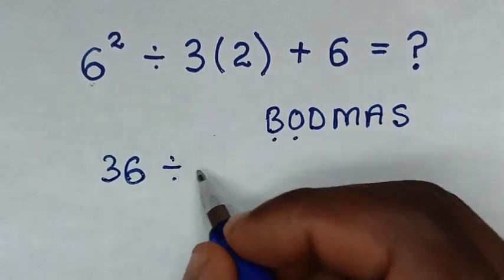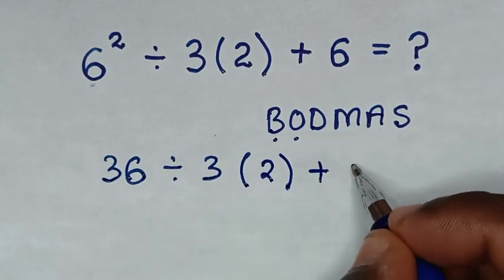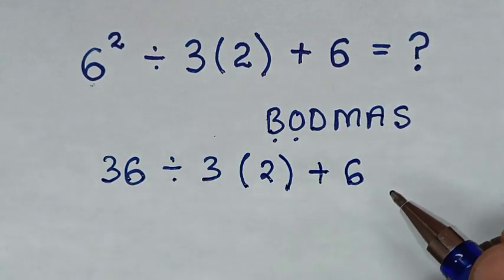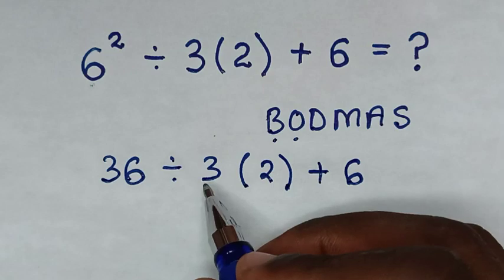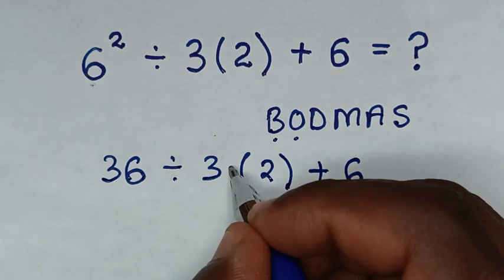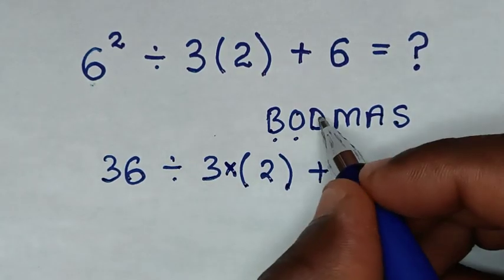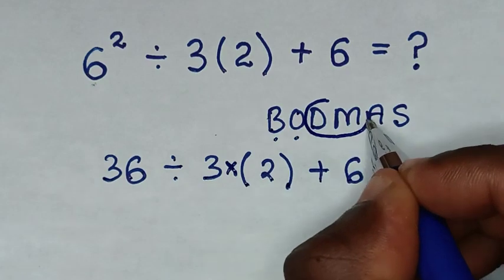Then divide by 3 bracket 2 bracket plus 6. Then from here between 3 and 2, here in the bracket, we have multiplication sign. Then we come to deal with this group of division and multiplication.